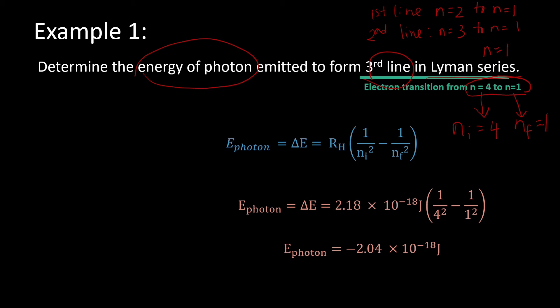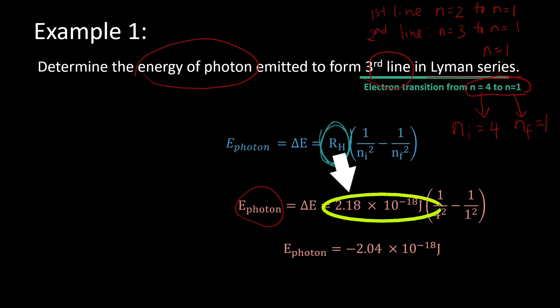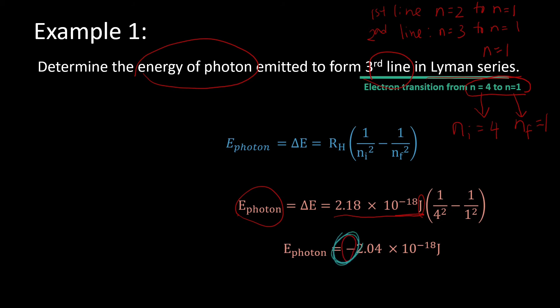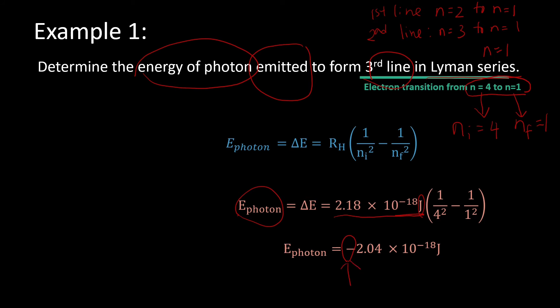One thing to take note: since we are calculating energy, the Rydberg constant we use must be 2.18 times 10 to the power of negative 18 joules — the unit joules corresponds to energy. The second thing to note is the negative sign. We will definitely get a negative value because photon is emitted, meaning energy is being released. This negative sign tells us that energy is released as a photon when the electron moves from n equals to 4 to n equals to 1.